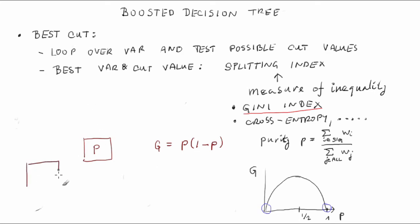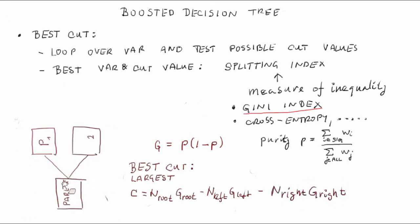Back to the optimal cut. We calculate Gini indices for the parent block as well as for the two sub-blocks results of the cut. The best cut is defined as the one that yields the highest difference between Gini indices of the parent block and the daughter blocks, each weighted by the total number of events in the corresponding block. C equals N_root times G_root minus N_left times G_left minus N_right times G_right. The numbers of events are in fact sums of event weights. Obviously.